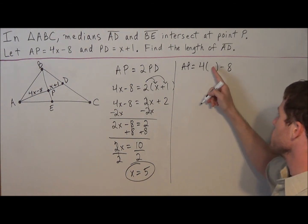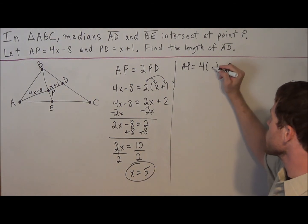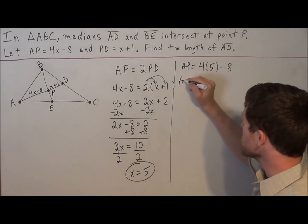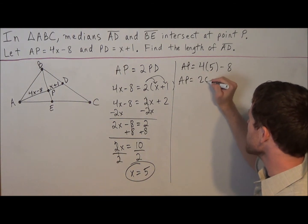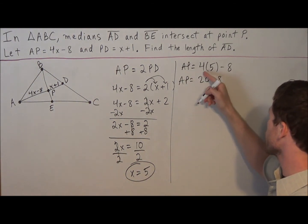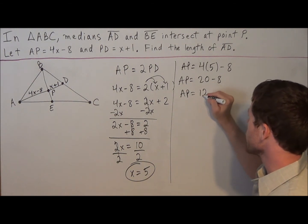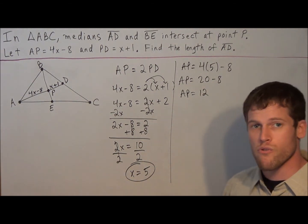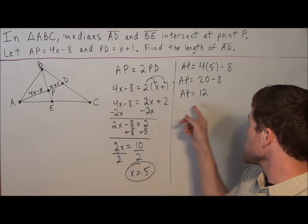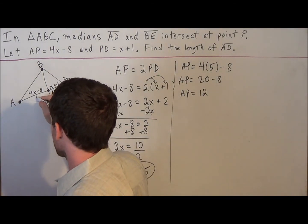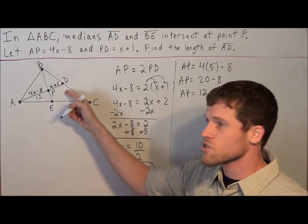AP is equal to 4x minus 8. But instead of x, we're going to leave a blank parenthesis there. x is equal to 5. So AP is equal to 20 minus 8. We're just doing 4 times 5. So AP is equal to 12. Now before we do any work, if we remember our theorem, the long piece, which we just found to be 12, is twice as long as the short piece.